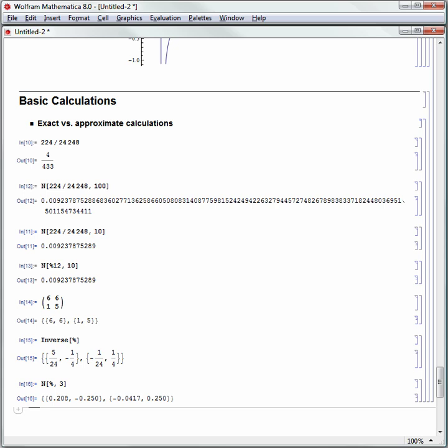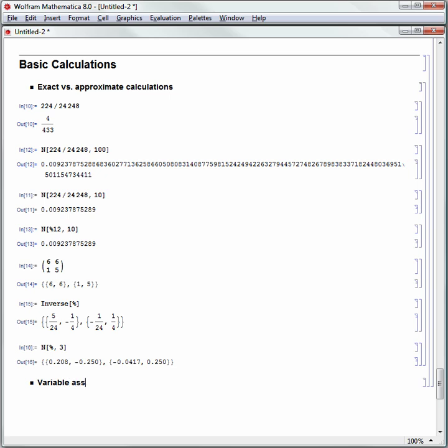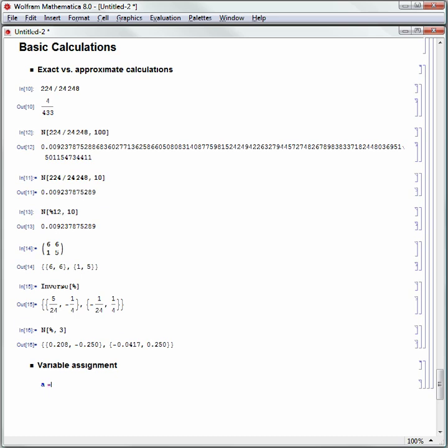But if you restart Mathematica, if you save this notebook and then reopen it again later, it may not be that same quantity of that numbered output. So let me show you a different thing. Let's make a new horizontal line. Hit Alt 5 to make a new subsection. We're going to call this Variable Assignment. Hit the down arrow key so we can make a new cell. We can start typing again.